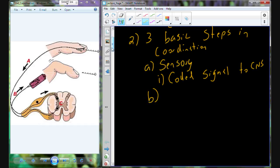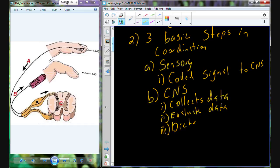So that coded signal is sent in through a sensory process to the central nervous system. Once that signal gets into the central nervous system, it's going to be collected. So we're going to collect data, we're going to evaluate that data - it's not just simply collecting up and putting the data into a bin, it's going to also include what does this data actually mean. And then we're going to dictate a response.